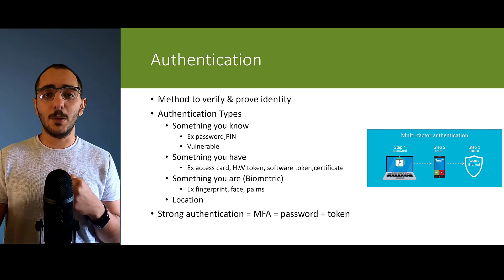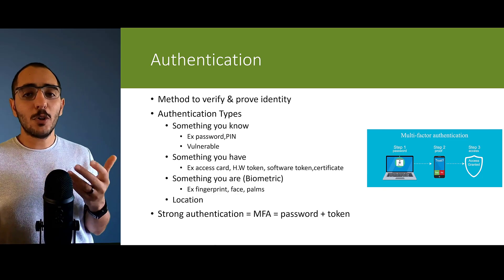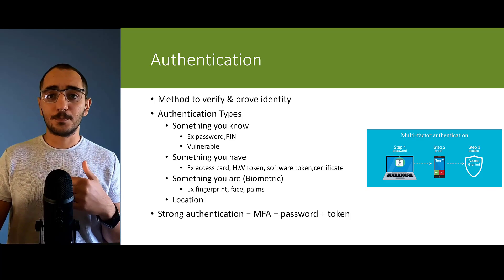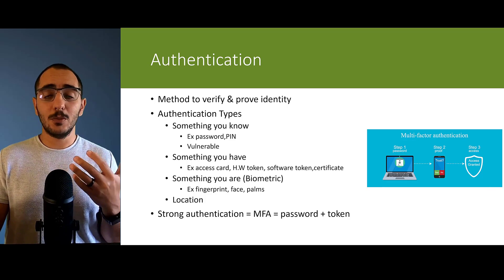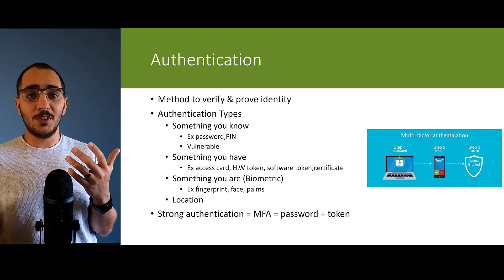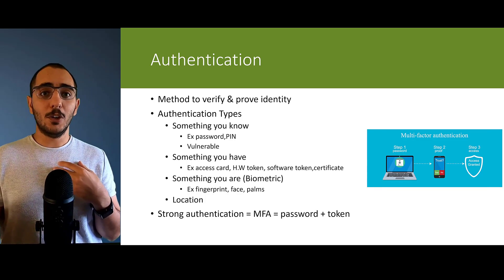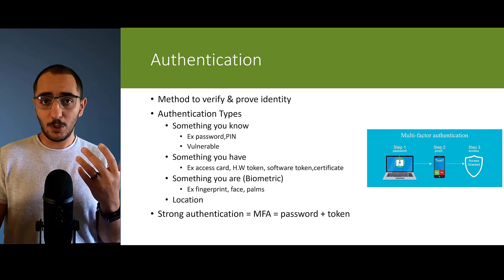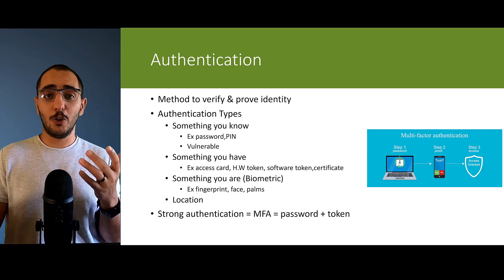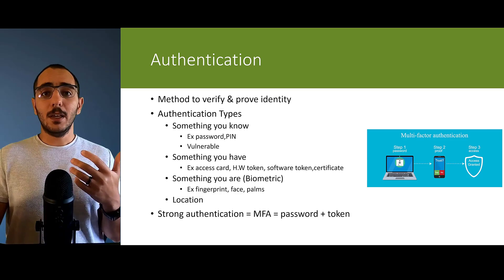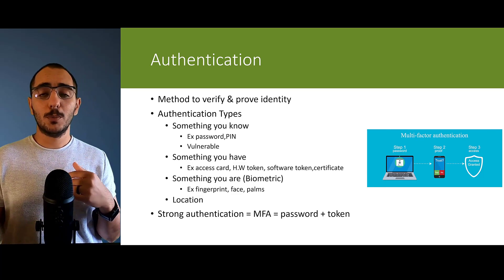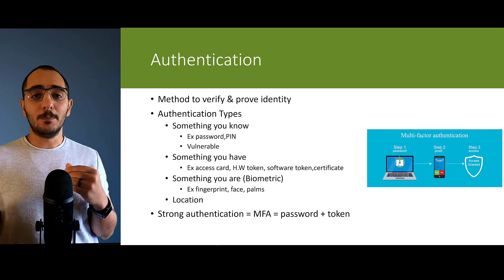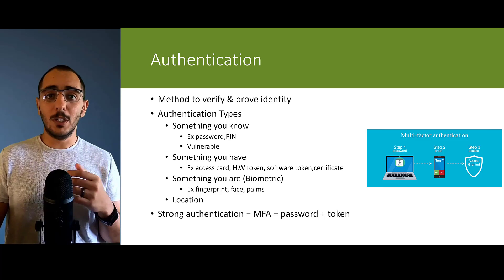Location is another authentication type. A strong authentication would include something that you know combined with something that you have — so if something you know is compromised, you still have something harder to compromise, like a token code. For example, a password combined with an application on your phone that provides a token code is much harder to break.